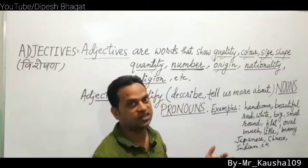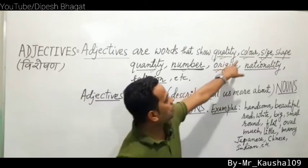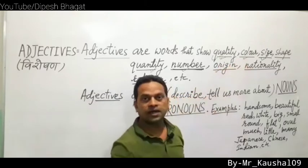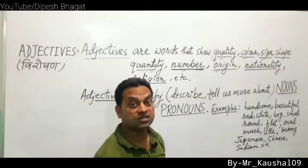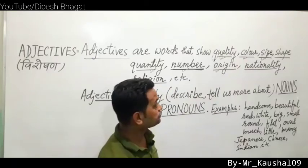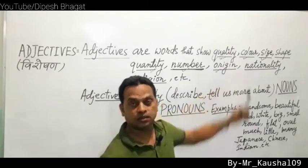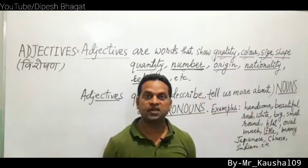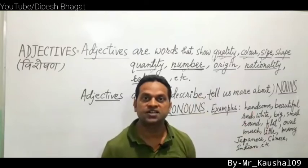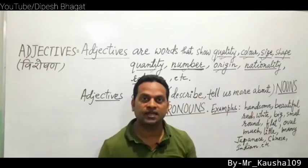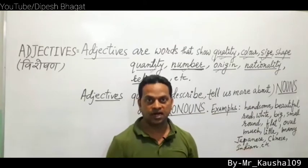All these words — boring, lazy, naughty, bad — are adjectives because they show negative quality. Words showing positive quality are also adjectives. Next, color: red, white, pink, brown — words that show color are adjectives. Then size: 'This classroom is big' — big is an adjective showing size.